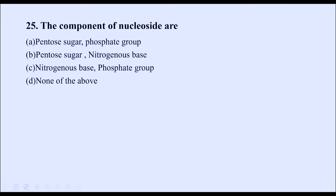The components of a nucleoside are pentose sugar and nitrogenous base — there is no phosphate group in a nucleoside. So the correct option is B.